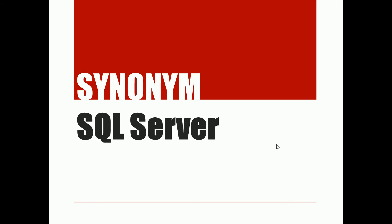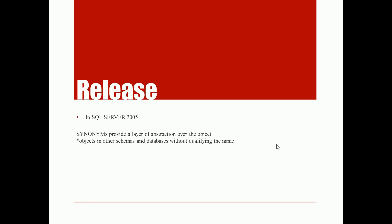In this session we'll talk about the synonym feature in SQL Server. This feature was released in SQL Server 2005 and the main purpose is to create an abstraction layer on top of an object. That object can be in the same schema or a different database, and that database can be on the same server or a remote server. Without qualifying the full name each time, you can create an alias on top of it and use that alias wherever needed.